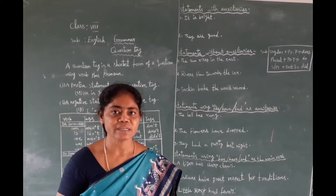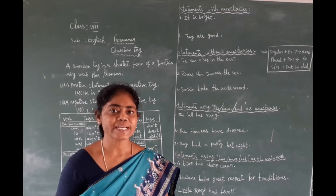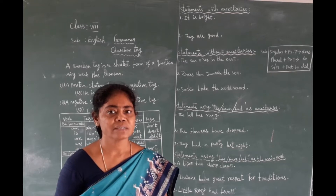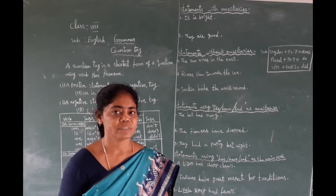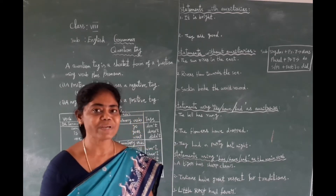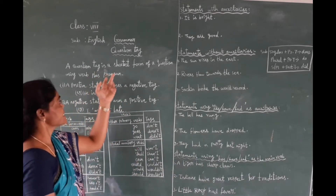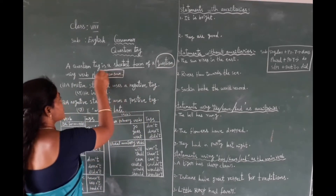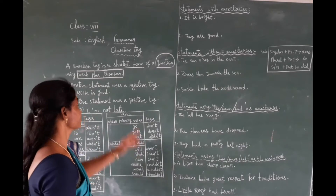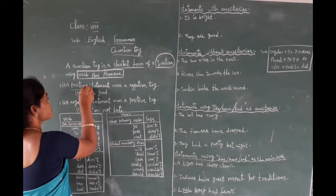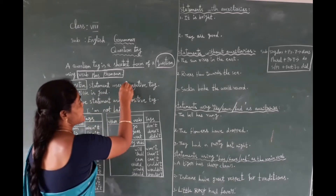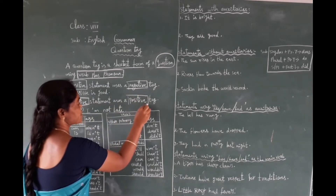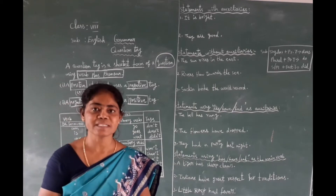Good morning children, welcome to the online class. Today I am going to take the class on eighth standard English grammar. The topic is question tags. A question tag is the shortest form of a question, using a verbose form. A positive statement uses a negative term, and a negative statement uses a positive term.